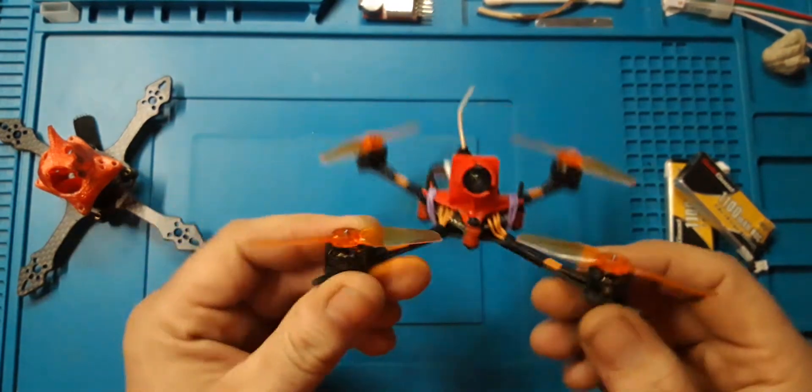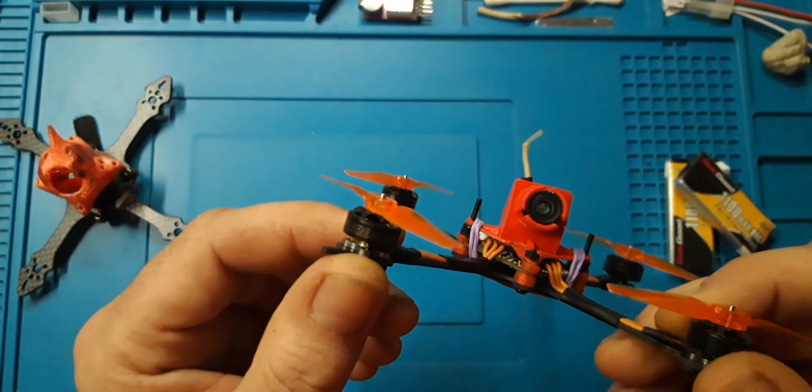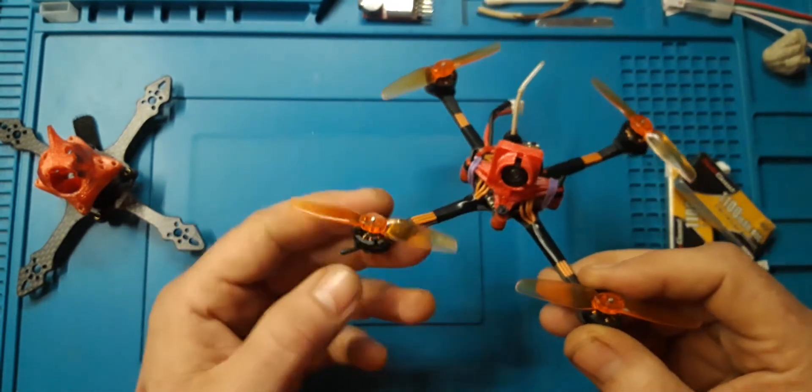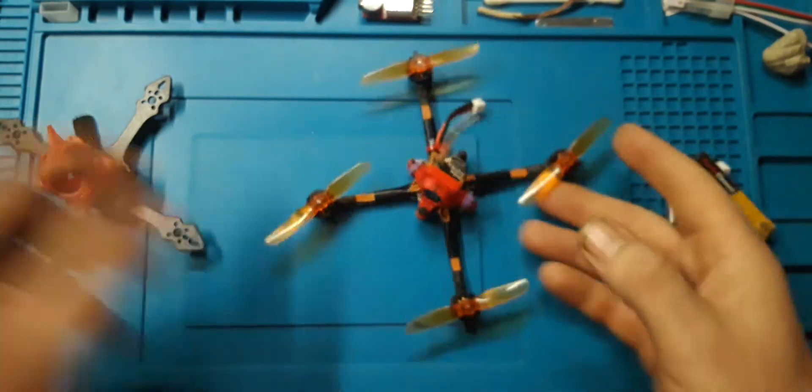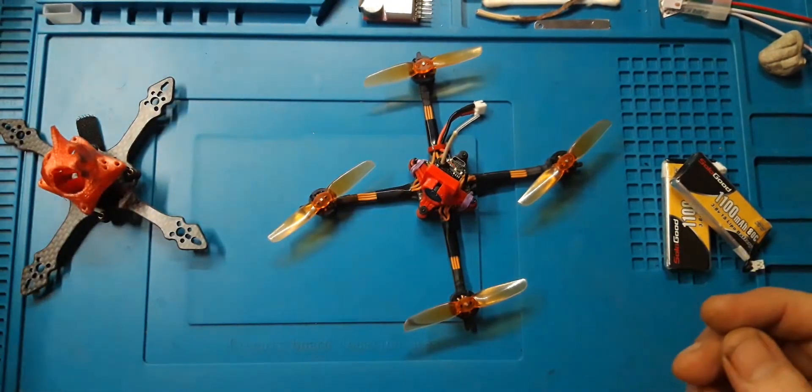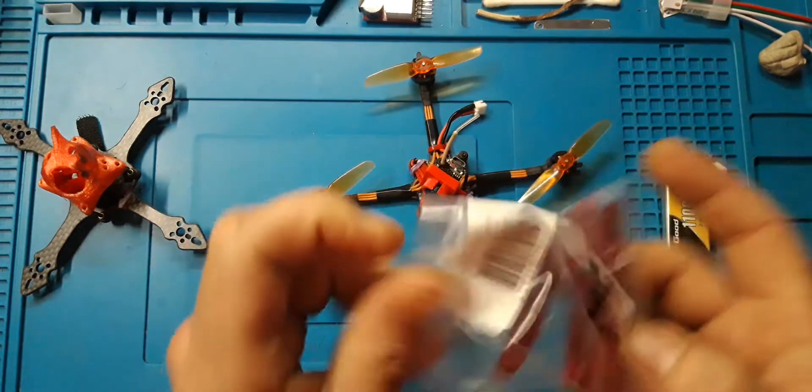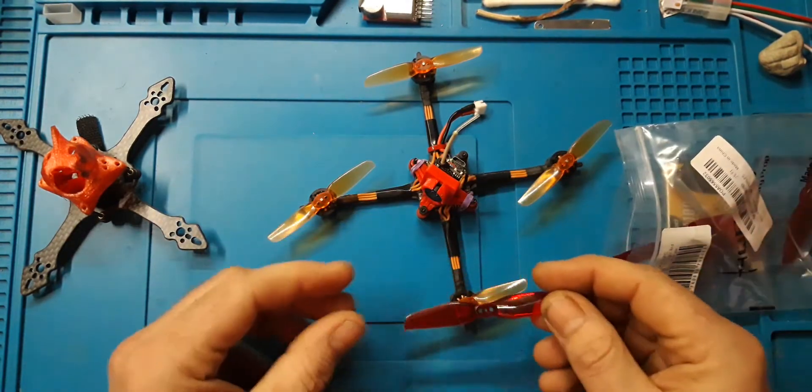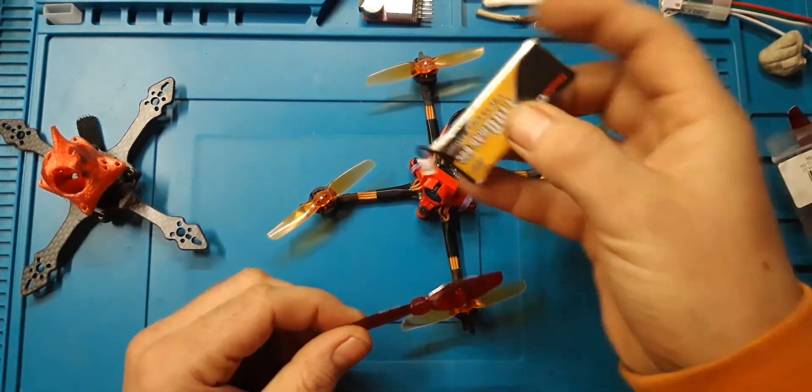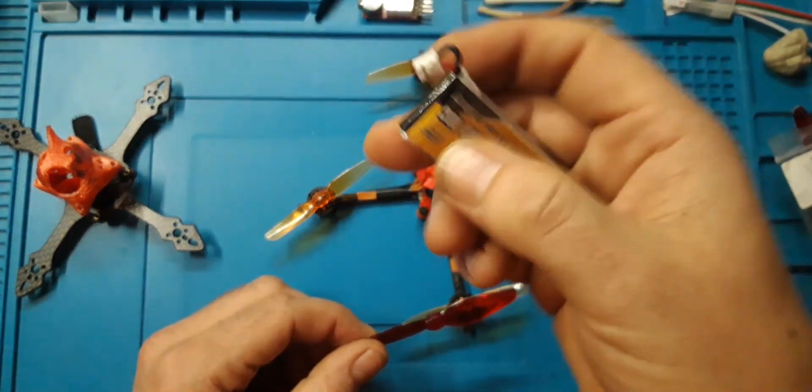Yeah this quad's got the Diatone Mamba 1103, the MB 1103 1200 KV. These work really well on 1s, really impressed. I have got the HQ props, the 65 millimeter bi-blades. You could probably run them on the three inch HQ bi-blades as well. They're significantly bigger. I think you'd get a lot more punch out with these if the battery can provide it. Of course changing this to a bigger wires inside the battery and also changing this to an XT30, then I think this would be a really good option.